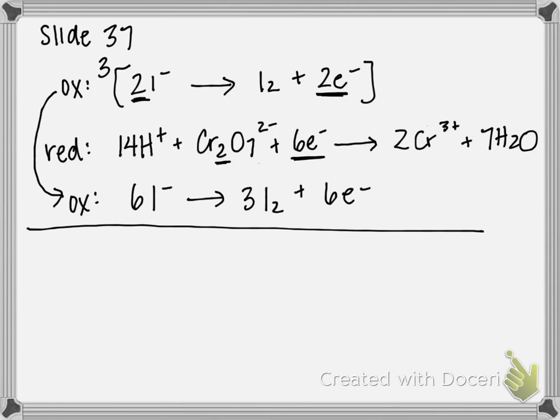Now the last thing I need to do is add these two half reactions together. So only thing that's going to cancel are my electrons. We have six electrons in the reduction reactant side and six electrons in the oxidation product side. So those are going to cancel.